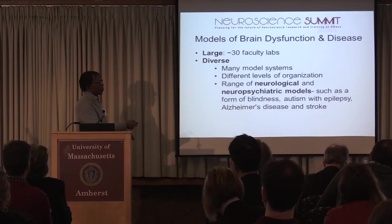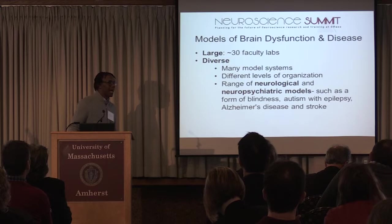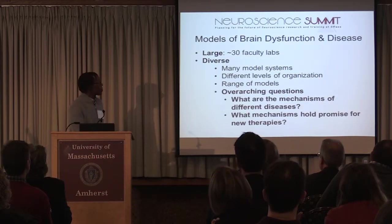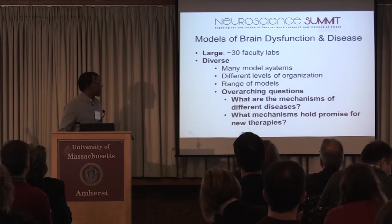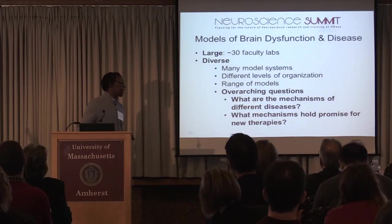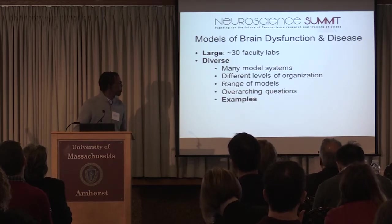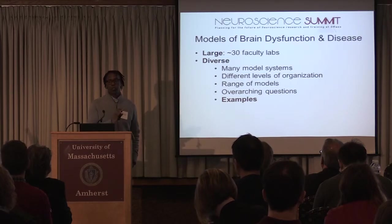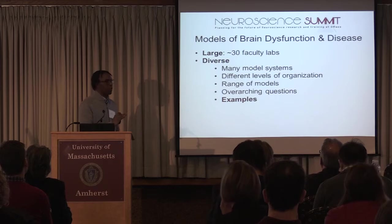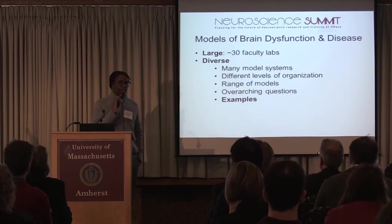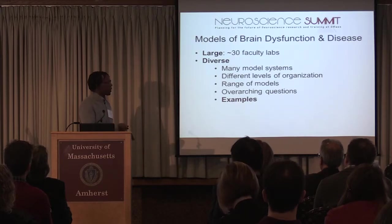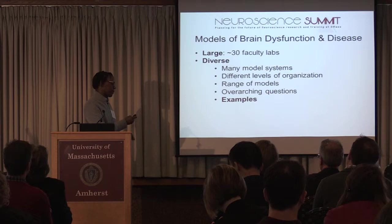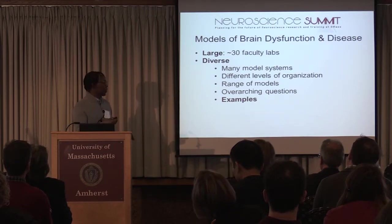We study a wide range of neurological and neuropsychiatric models — for example, a form of blindness, autism with epilepsy, Alzheimer's disease, and stroke. Our overarching questions include: what are the mechanisms of different diseases, and what mechanisms hold promise for new therapies? One point on which we'd appreciate input from our expert panel is whether we should organize our community along certain disease themes — for example, addiction or neurodegeneration — to study a given disease along different levels of biological organization.